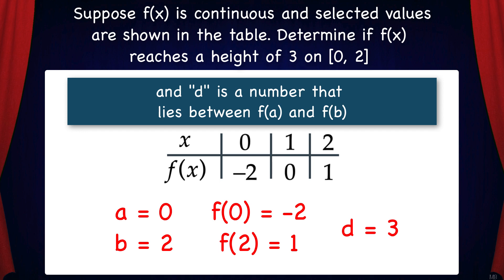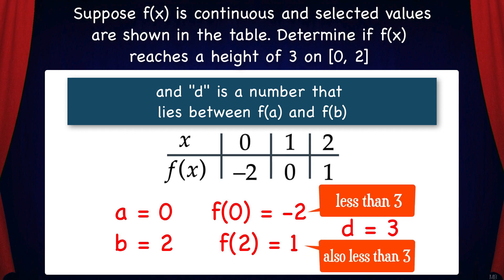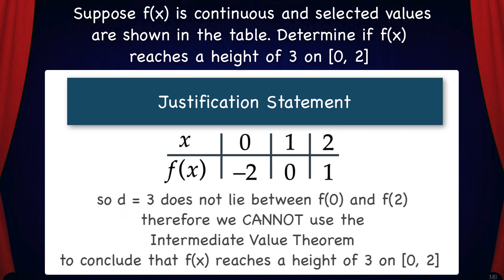But here's the thing: f(0) is less than 3 and f(2) is also less than 3. So d equals 3 does not lie between f(0) and f(2). Therefore, we cannot use the Intermediate Value Theorem to conclude that f(x) reaches a height of 3 on the interval 0 to 2. It's possible that it does, but we just don't have enough information in the problem to make that conclusion using the Intermediate Value Theorem.